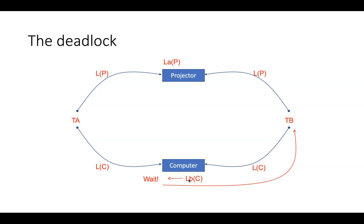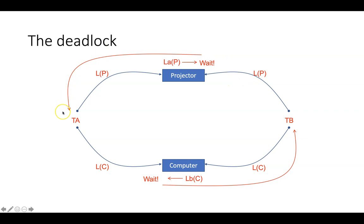Similarly, B says 'can I use the projector now?' But it's currently granted to A, so the system says no — B has to wait. Wait for whom? Wait for A. So currently A is waiting for B, and at the same time B is waiting for A. They're waiting for one another — this is called a deadlock.